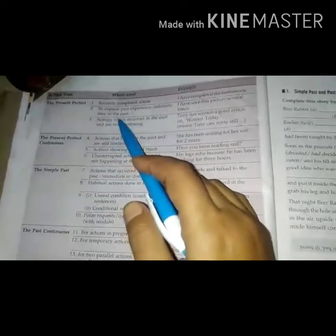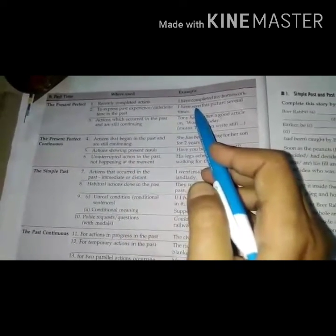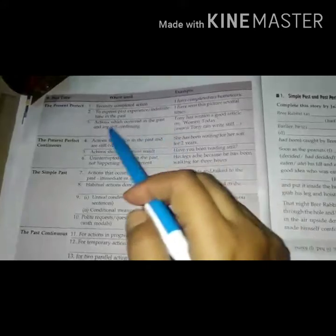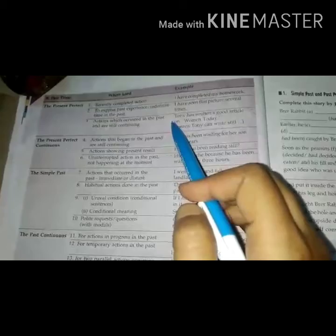The present perfect: Recently completed action - I have completed my homework. Number two, to express past experience, indefinite time in the past - I have seen this picture several times. Number three, actions which occurred in the past and are still continuing. Example: Tony has written a good article on woman today. Means Tony can write still.